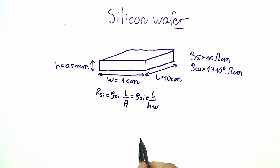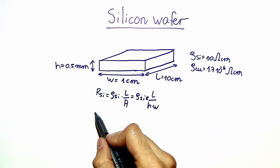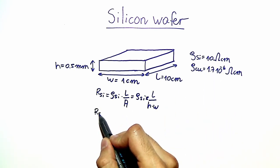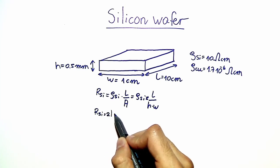Plugging in the numbers and using the fact that the resistivity of silicon is 10 ohm centimeters, we arrive at the solution, namely the resistance is given by 2 kilo ohm.